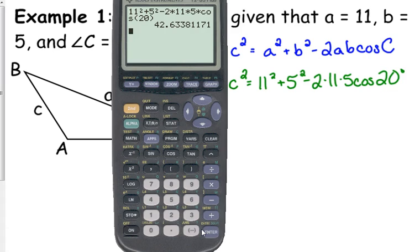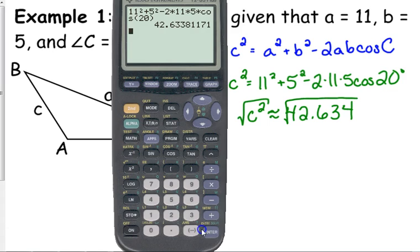So type all that in: 11 squared plus 5 squared minus 2 times 11 times 5 times the cosine of 20 degrees. Let's stick with 3 decimal places. But is that C? No. What do we have to do? Take the square root. And that should also make sense, that that is not side C, because this is across from a 20 degree angle. And our other two sides are only 11 and 5. It doesn't make any sense whatsoever for this side to be 42.634.